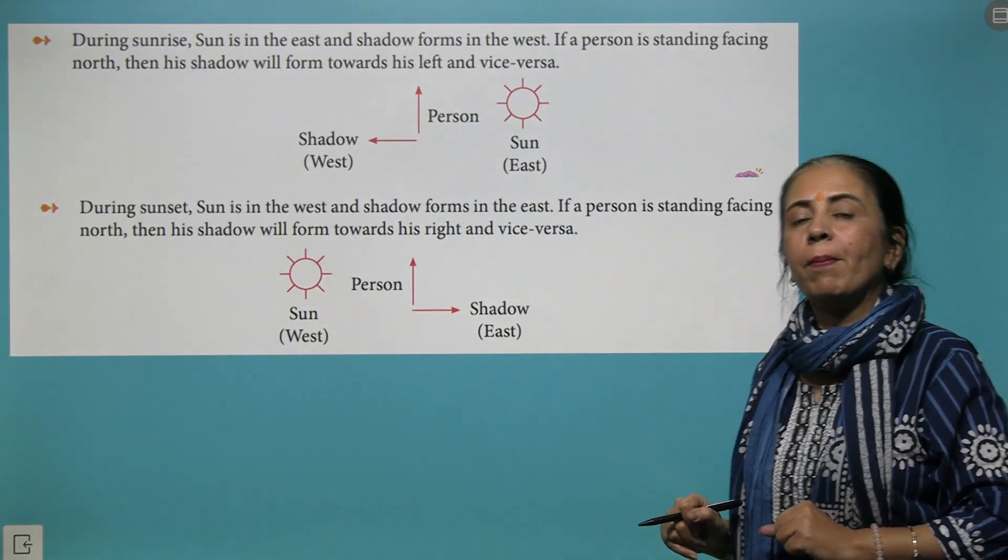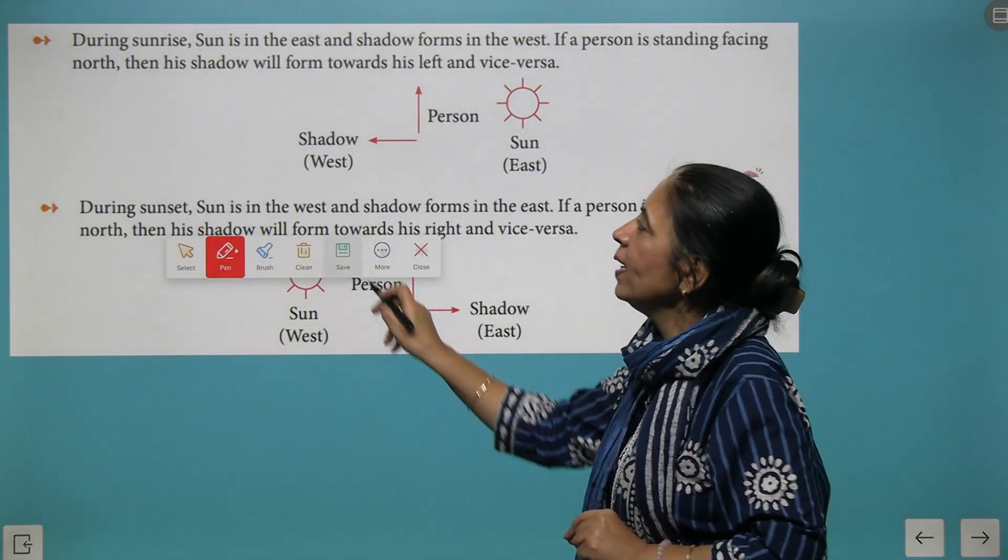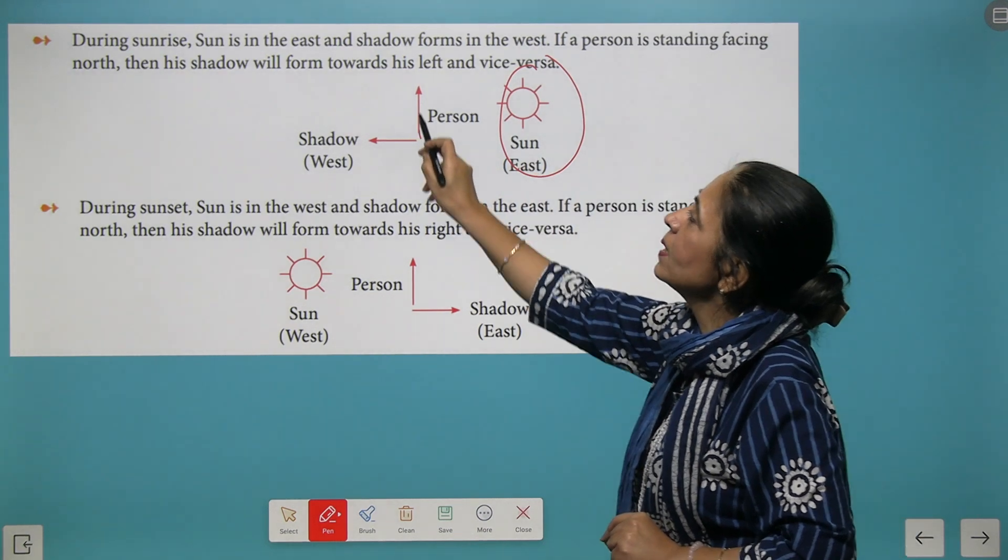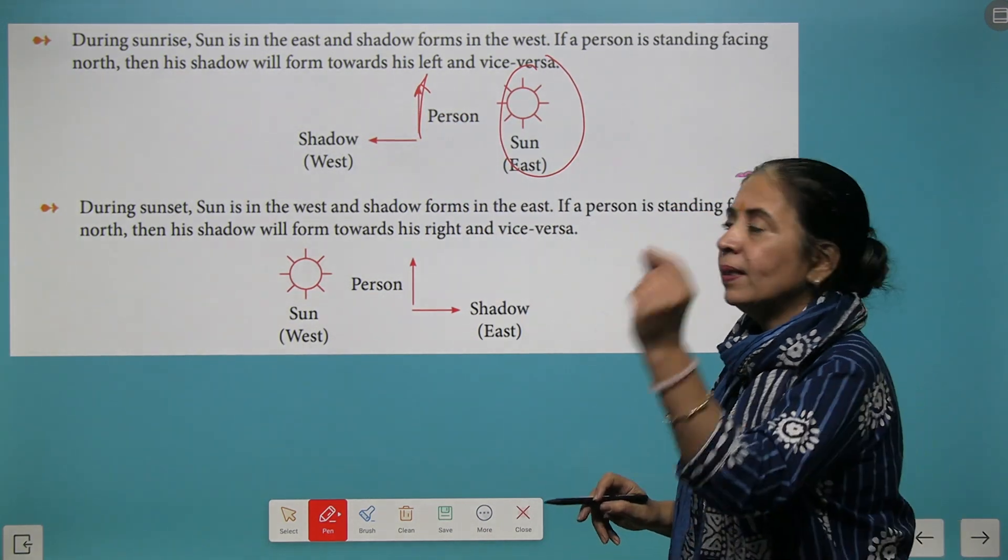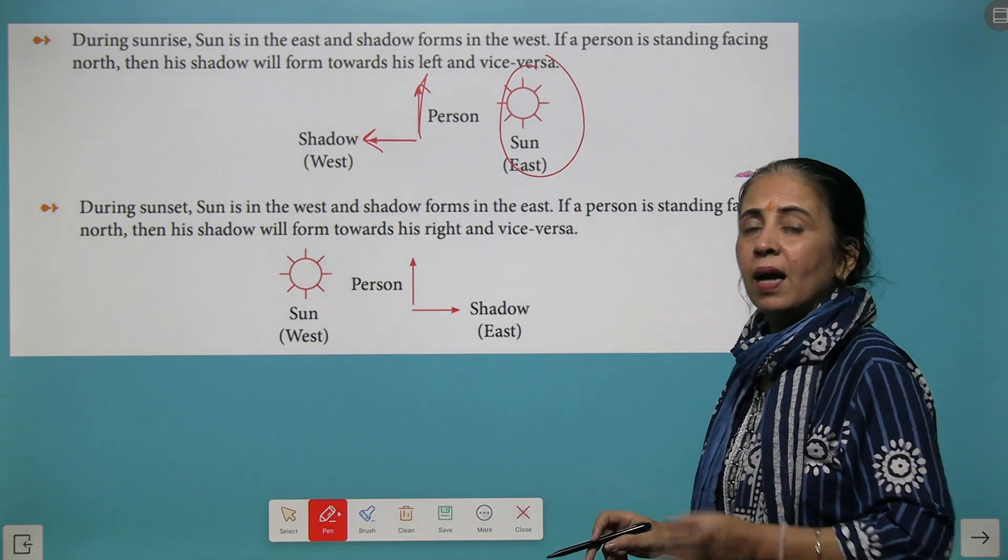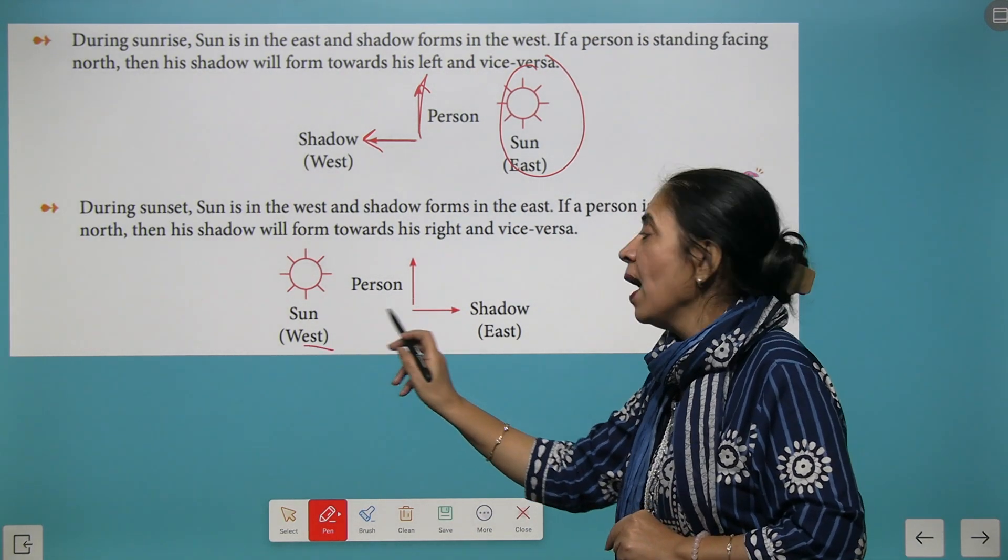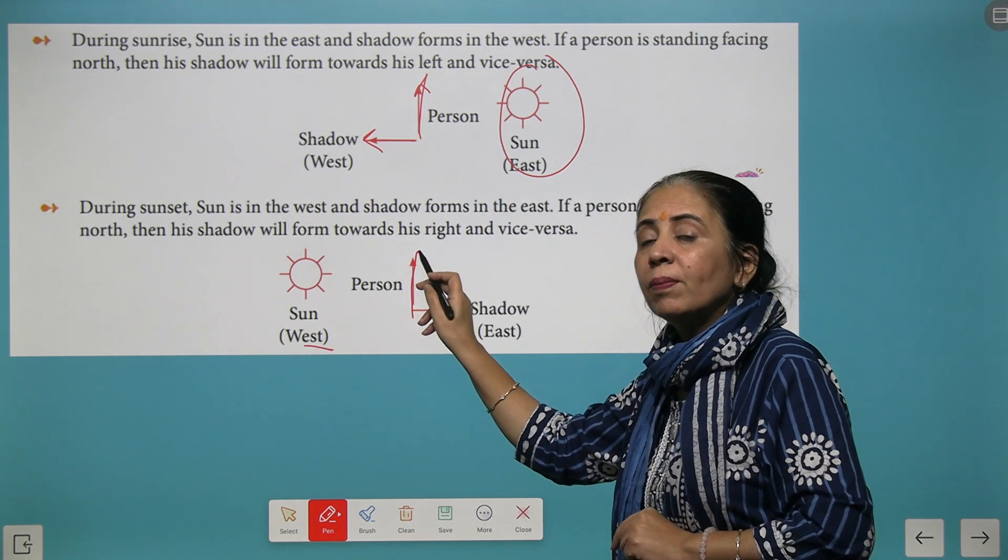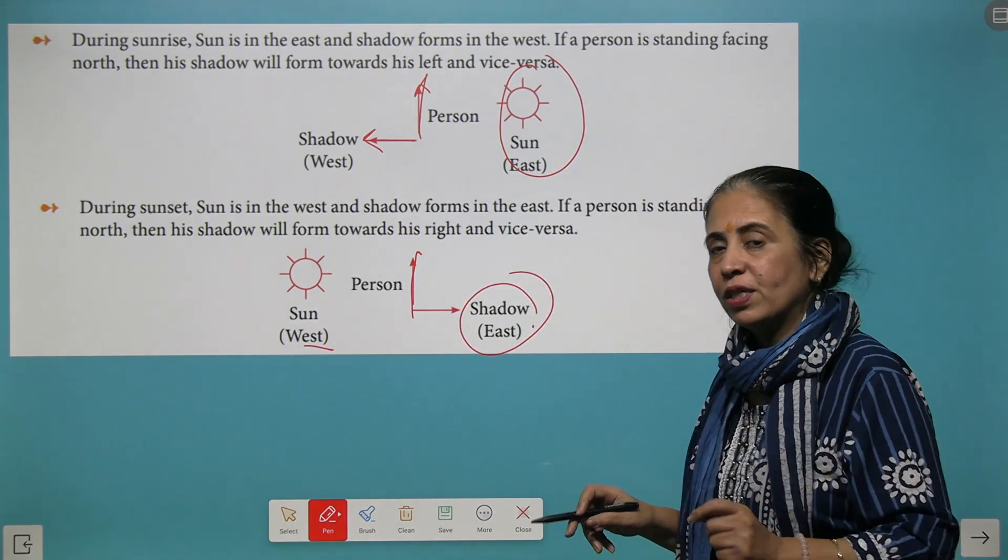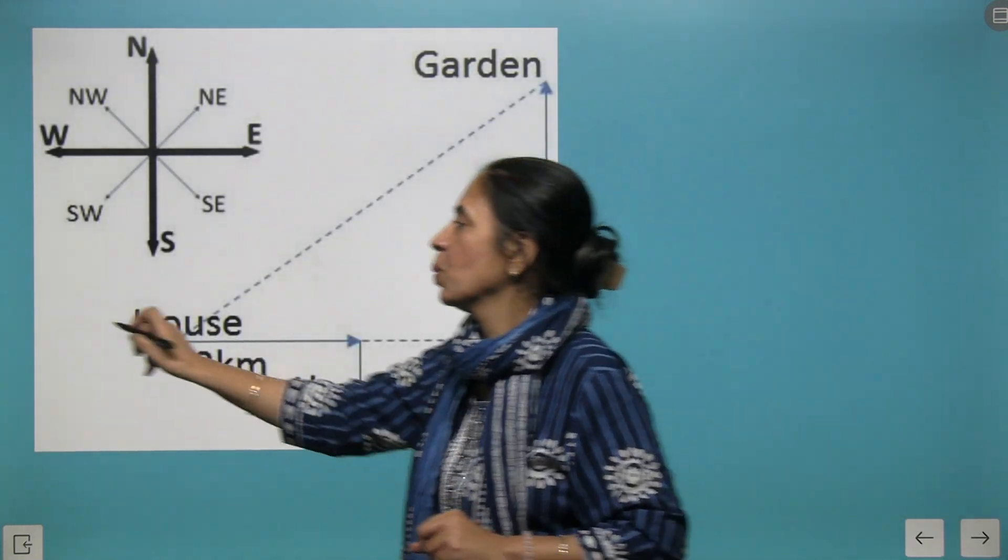Now we come to questions of sunrise and sunset. Remember one very important key thing: during sunrise, the sun is in the east. If a person is facing towards north, then its shadow will be towards west and vice versa. Similarly, in evening time, the sun is in the west. If the person is facing towards north, his shadow will come in the east direction and vice versa. Keeping these small tips in mind, we will be able to solve questions very easily.